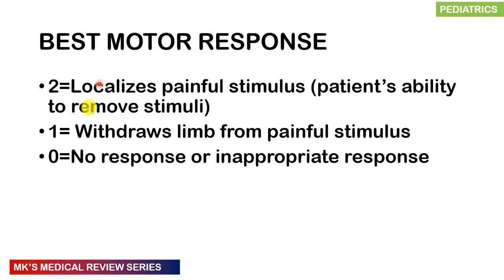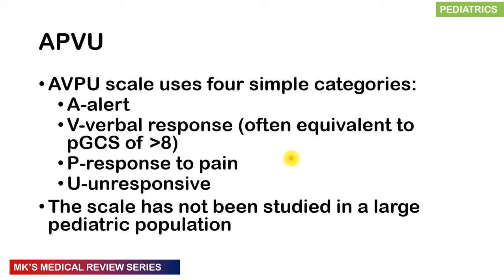The AVPU scale is very simple. A is for alert, V is for verbal — a V score is roughly equivalent to a GCS of 8 or above. Anything less than 8 corresponds to P, which is response to pain, and U, which is unresponsive. This scale has not been widely used in large pediatric populations, so it is not strongly recommended for pediatric use.